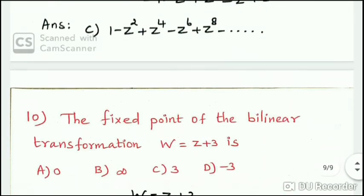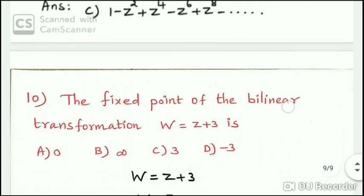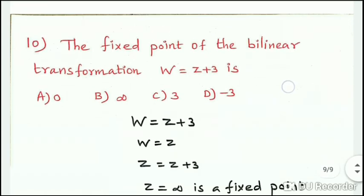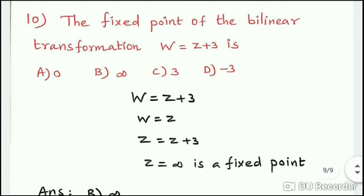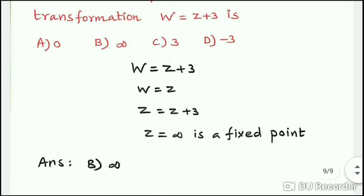Next question: the fixed point of the bilinear transformation w = z + 3. To find the fixed point, set w = z, giving z = z + 3. There is no finite z satisfying this, so z = infinity is the fixed point. Option B: the answer is infinity.